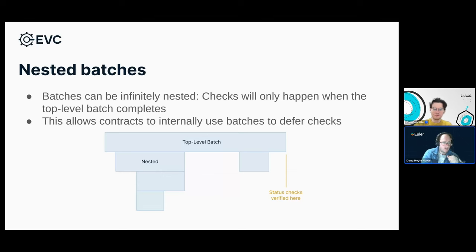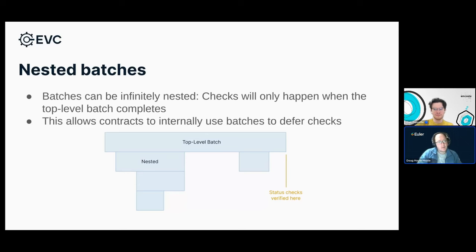There is no EVC-enforced limit on batch nesting — obviously there are other constraints like call depth limit and block gas limit, but the EVC itself doesn't enforce a nesting limit.